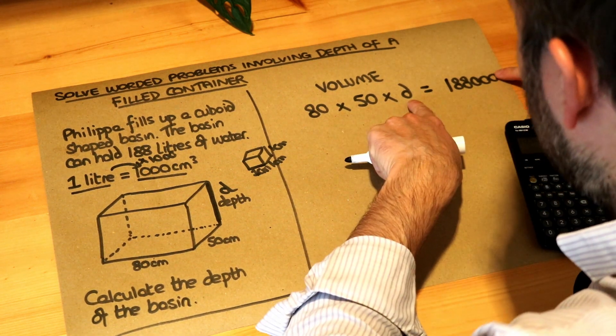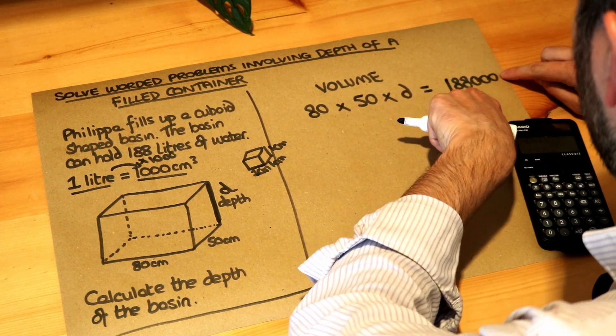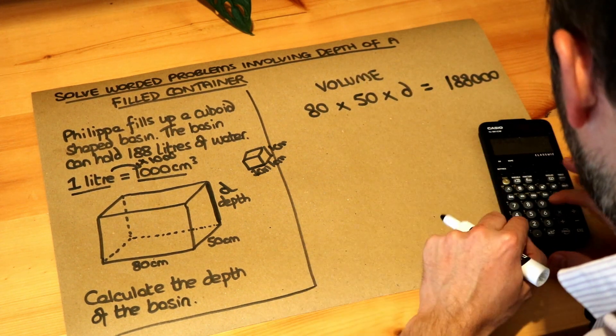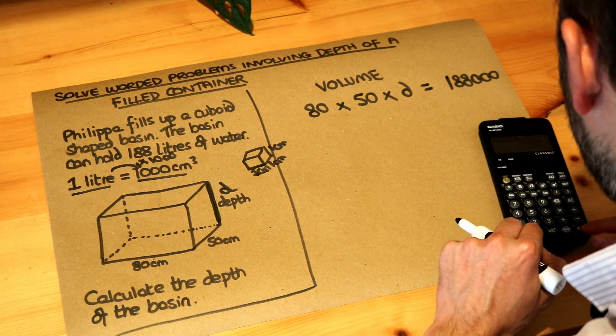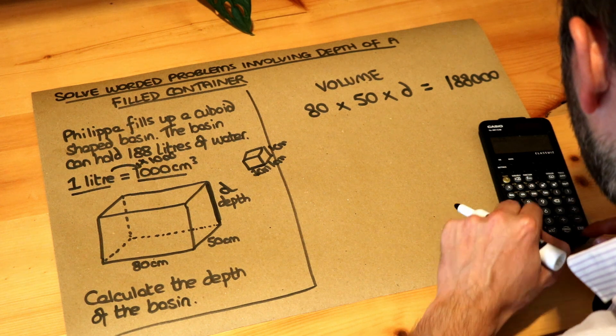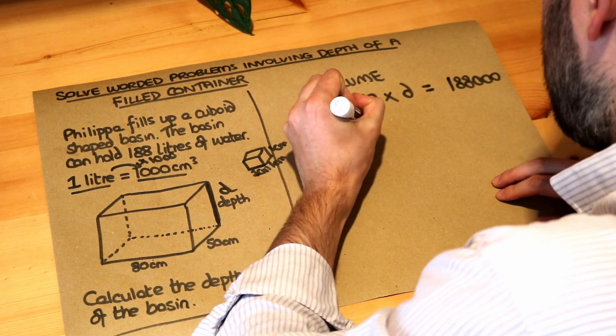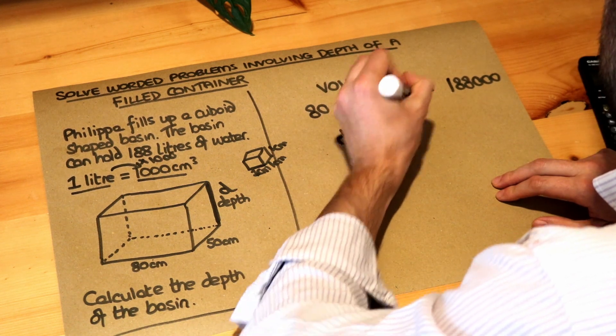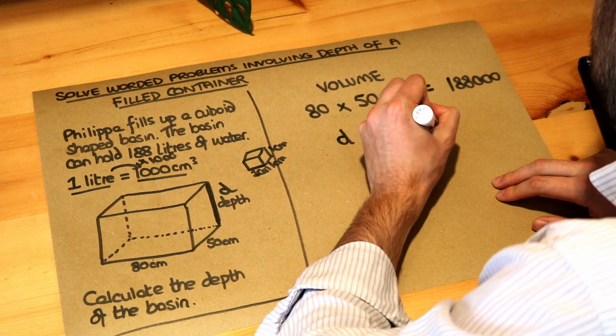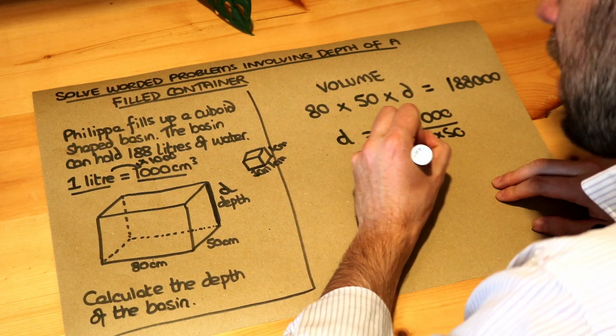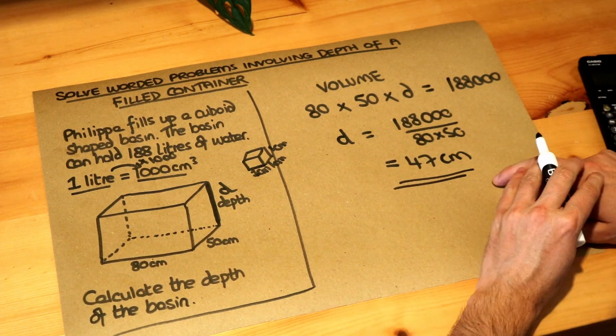Now you can see d the depth is being multiplied by 50 and then by 80 to get the volume of water. So we just need to divide that 188000 by 50 and by 80 and you get 47. So the depth is 188000 divided by the 80 and the 50 together and that gives me 47 and the unit will be in centimetres. So that's the final answer.